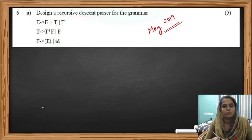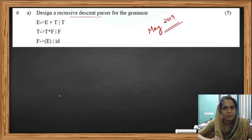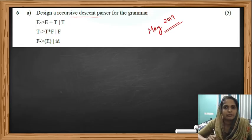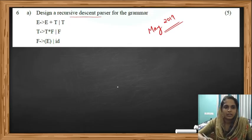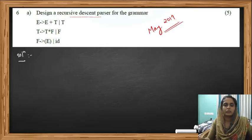So what we have to do? First we have to analyze whether the given grammar contains any left recursion. If there is any left recursion, first we have to eliminate it. If you don't know how to eliminate left recursion, please watch my previous videos on left recursion. So now let's move on to the solution.